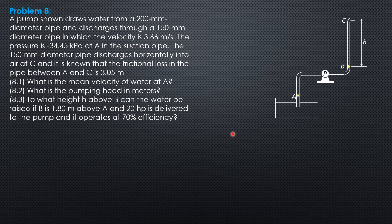This is the given situation figure. First for 8.1 we apply continuity equation QA equals QC. Pi over 4 times 0.2 squared times velocity at A equals pi over 4 times 0.15 squared velocity at C which is given 3.66.